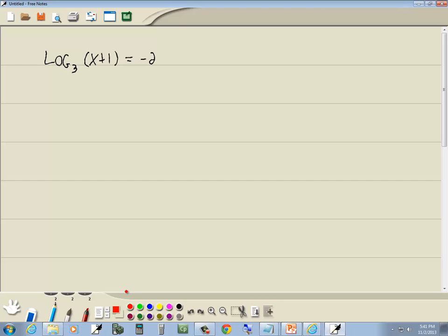First step, get everything with a log on one side and numbers on the other side. That's done. Second step, use properties of logs or basic algebra to get a single log. We already have a single log. That's done.